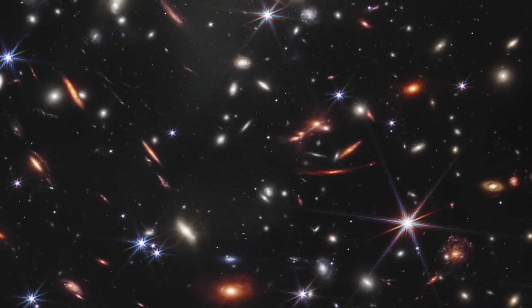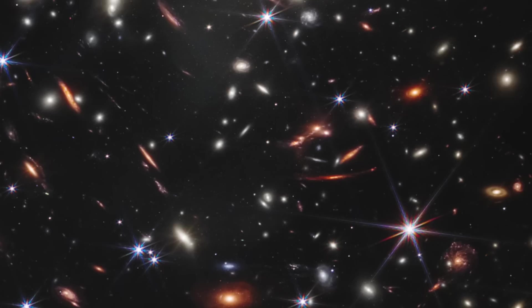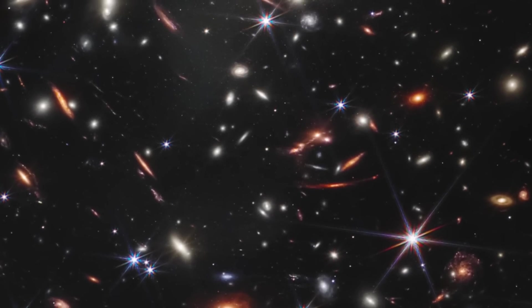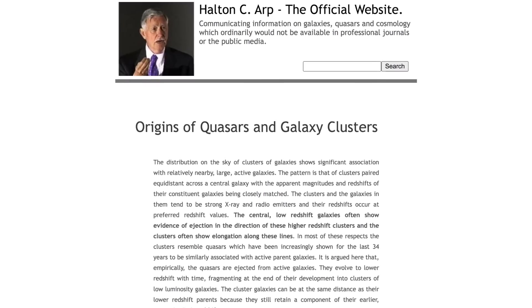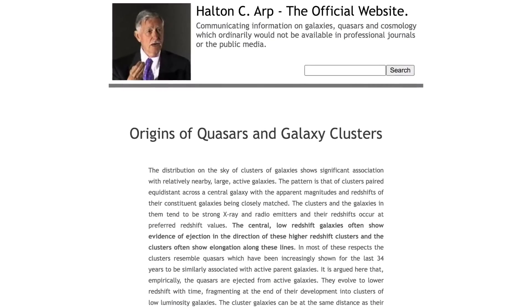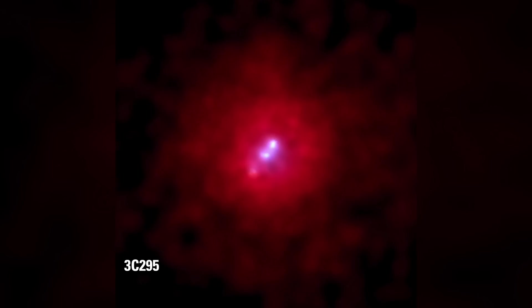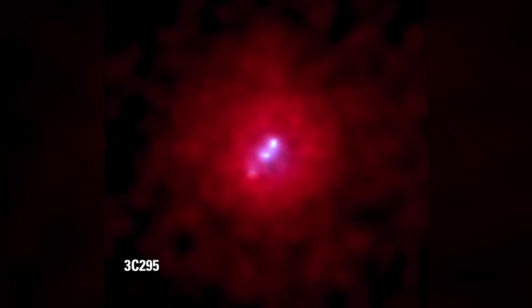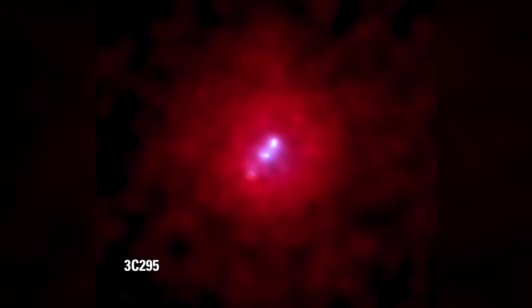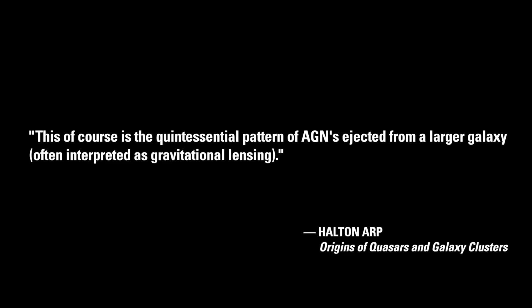As for the red, so-called distant, lensed galaxies of the Einstein cross type, Halton Arp explains in an article on his official website titled Origins of Quasars and Galaxy Clusters that two higher redshift galaxies are found almost perfectly aligned across a lower redshift galaxy on either side of it. He wrote, This, of course, is the quintessential pattern of AGNs ejected from a larger galaxy, often interpreted as gravitational lensing.